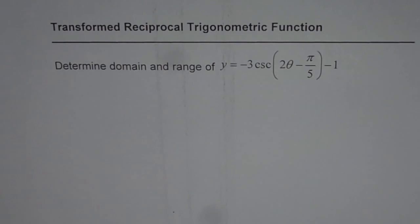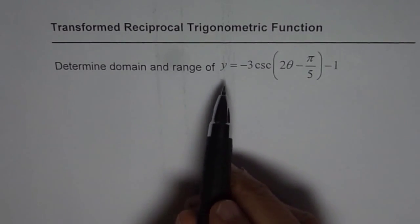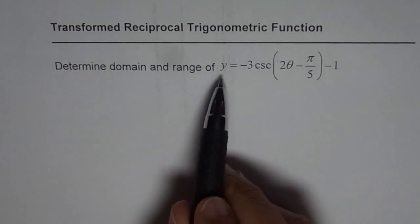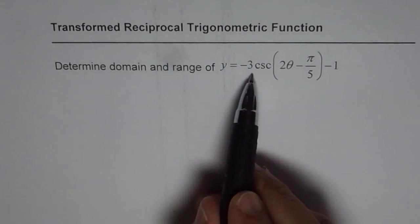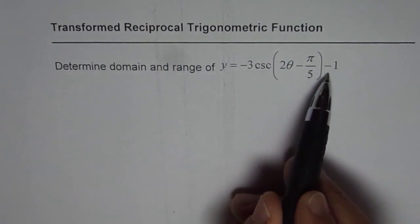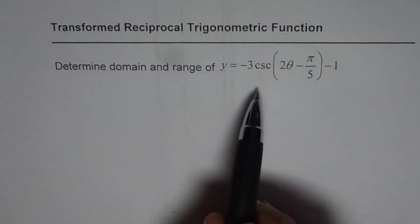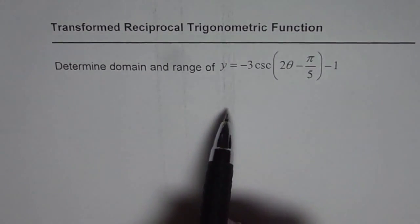I'm Anil Kumar and in this video we'll try to understand how to find the domain and range of a reciprocal transformed trigonometric function. We are given y equals minus 3 cosecant(2θ − π/5) − 1. Let's find out the domain and range for this function.